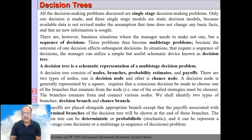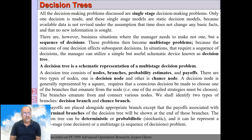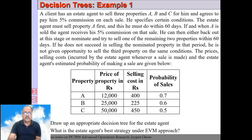We will construct a decision tree, which is basically a schematic representation of multi-stage decision problems, and from that we will find out the best route of decision for the decision maker. To understand decision trees, you need to understand the decision node, chance node, terminal node, decision branch, chance branch, and terminal branch. These will be explained through problems, which will make them easier to understand.